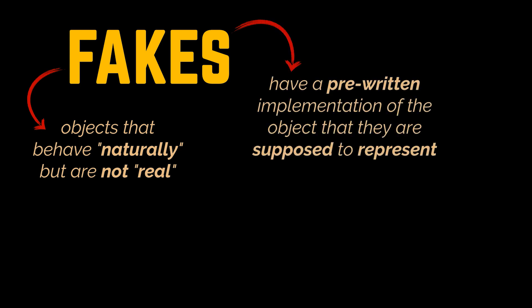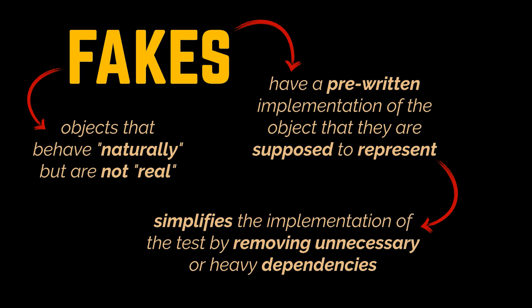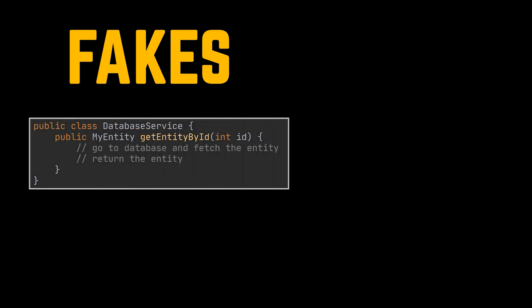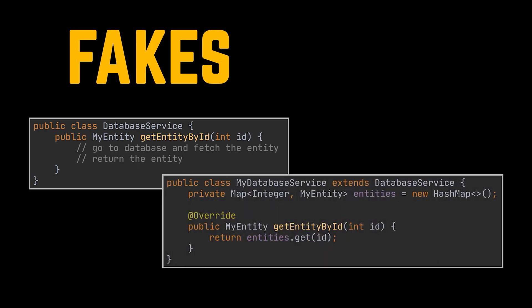There are a couple of terms you'll hear when talking about mock objects — the distinction between fakes, mocks, and stubs. A fake object is an object that behaves naturally but is not real. Fakes have a pre-written implementation with the same method signatures that return pre-arranged responses. The purpose of a fake is not to affect the behavior of the system under test, but to simplify the test by removing heavy dependencies. An example could be a fake database class — instead of hitting the DB, a map populated at the beginning of the test returns the desired objects by key.